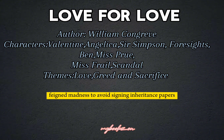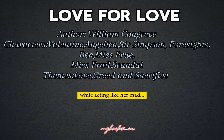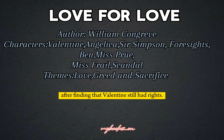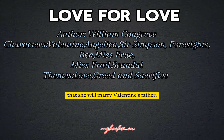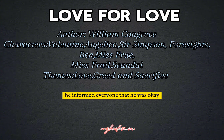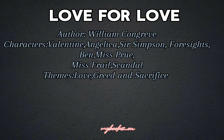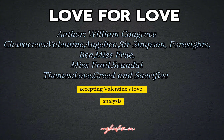Valentine feigned madness to avoid signing the inheritance papers. Miss Frail rejected Ben after finding that Valentine still had rights. Angelica tried to test Valentine's love by spreading the news that she would marry Valentine's father. This news shattered Valentine, and he informed everyone that he was okay and ready to sign the papers to get Angelica's love. The play ends with Angelica accepting Valentine's love.